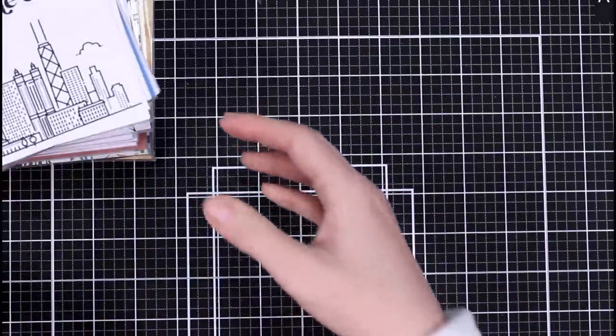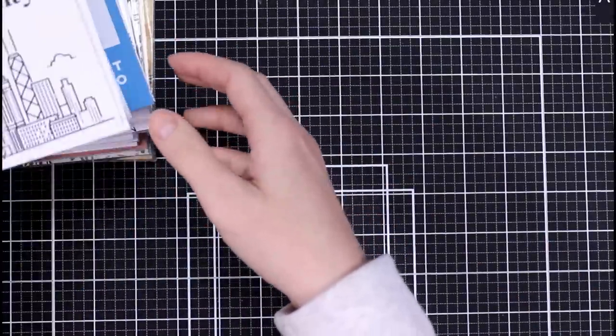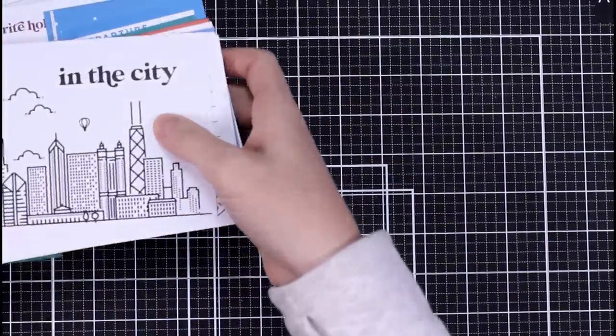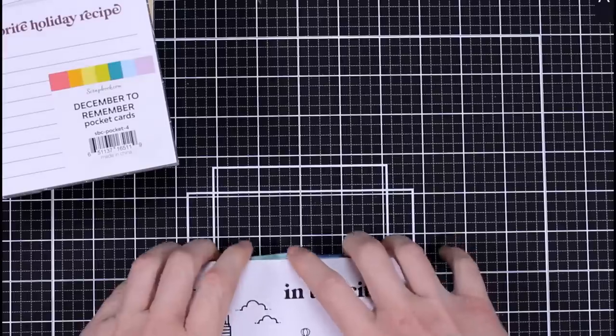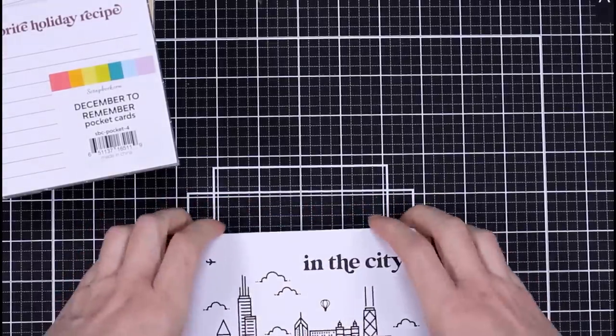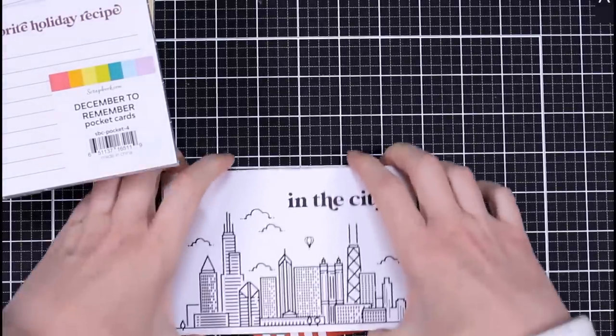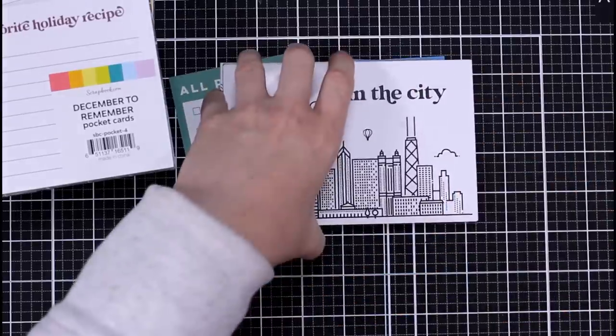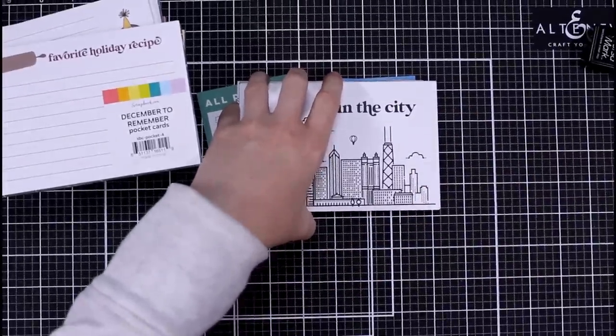I'm also wanting to journal more, so I'm going to get to using these cards here. I opened up one of them, but this is In the City, and I'm going to journal and try to scrapbook more in 2021. Let me open this up. This one is Favorite Holiday Recipes, and you can see how fun, so cute.